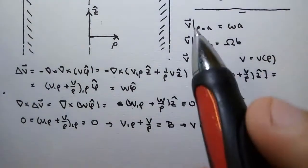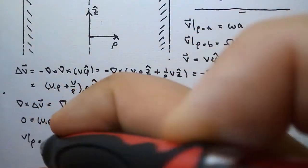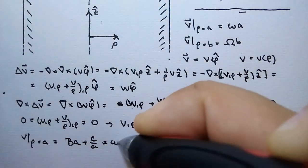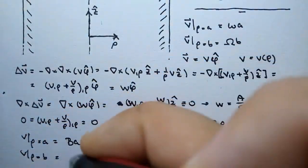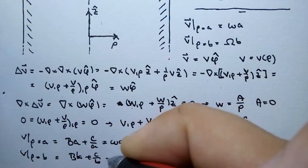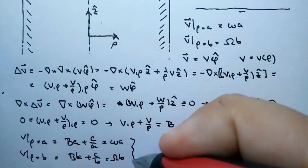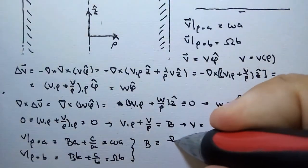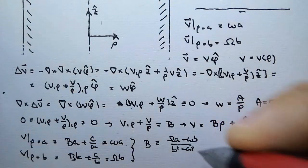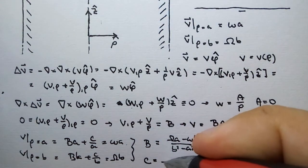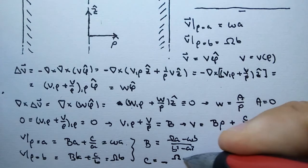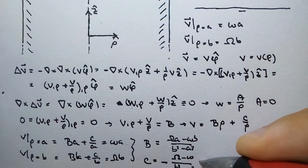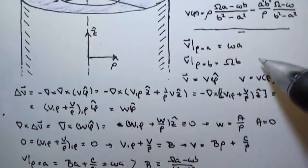Now we apply the boundary conditions. At ρ = a: Ba + C/a = ωa. At ρ = b: Bb + C/b = Ωb. Solving this linear system gives B = (Ωb² − ωa²)/(b² − a²) and C = −(Ω − ω)a²b²/(b² − a²), which are exactly the coefficients appearing in the Taylor-Couette formula.